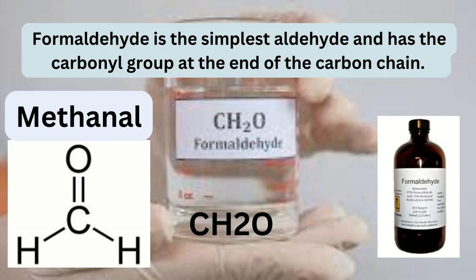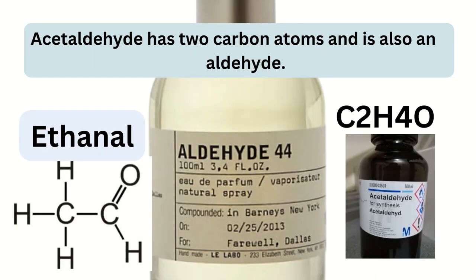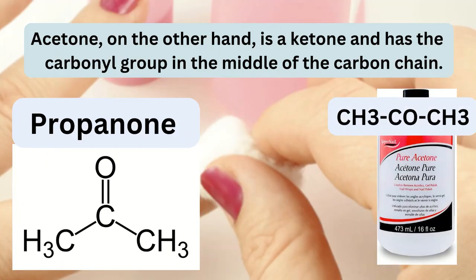Formaldehyde is the simplest aldehyde and has the carbonyl group at the end of the carbon chain. Acetaldehyde has two carbon atoms and is also an aldehyde. Acetone, on the other hand, is a ketone and has the carbonyl group in the middle of the carbon chain.